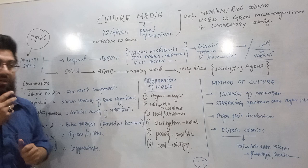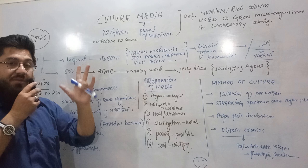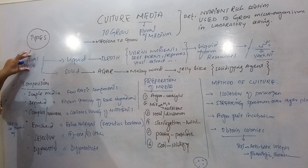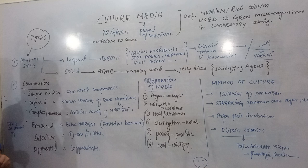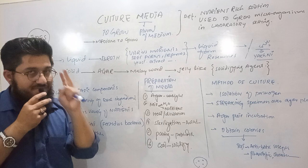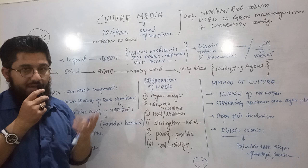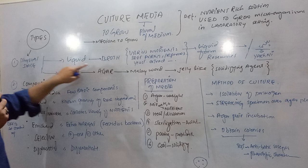Now we have two types of culture media. Based on physical state, when we look at the physical state of the media, we can classify culture media into two types: liquid culture media and solid culture media. Based on composition, we classify culture media into simple media, defined media, complex or natural media, enriched media, selective media, and differential media.